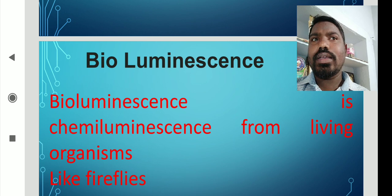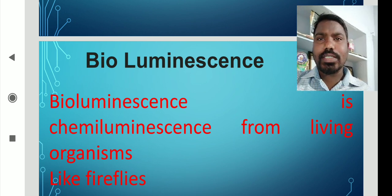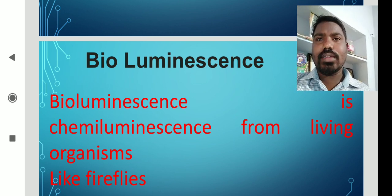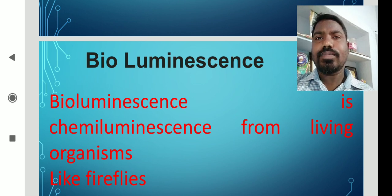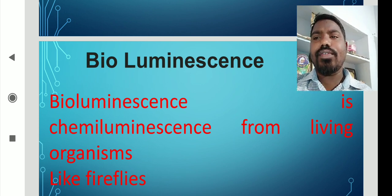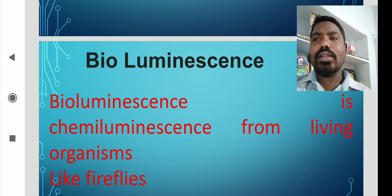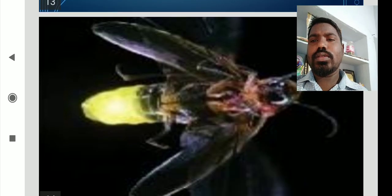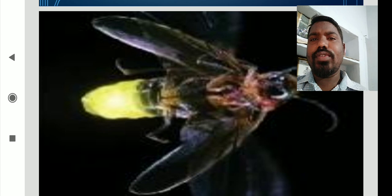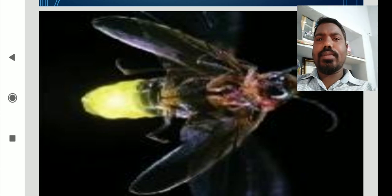We may see fireflies in the night producing a certain light. That light is because of the chemical nature of the firefly — the firefly releases a certain chemical, and that chemical gives off this light. You can see the flash in the tail of the firefly.